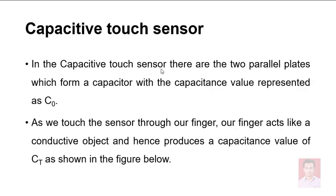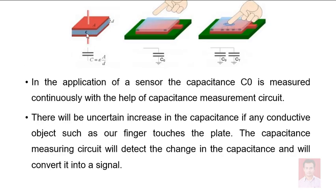Touch sensors are of two types: capacitive and resistive. In capacitive touch sensors, there are two plates with an initial capacitance C₀. When a user touches the sensor, the finger acts as a conductive object and produces a change in capacitance Ct. The finger's capacitance is added in parallel — since capacitors in parallel add up, the total capacitance becomes C₀ + Ct, which the circuit detects as a touch.